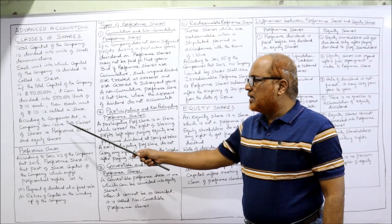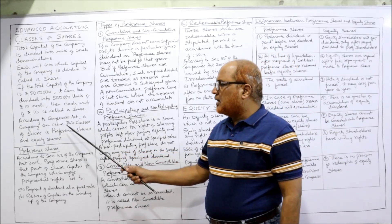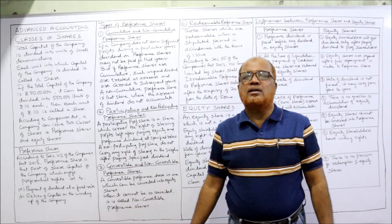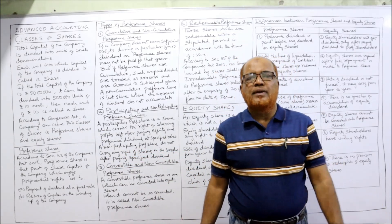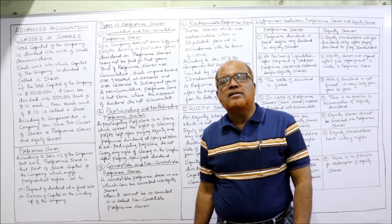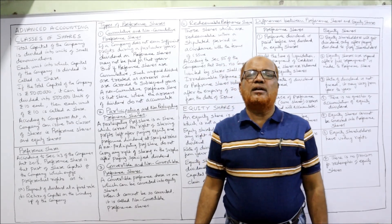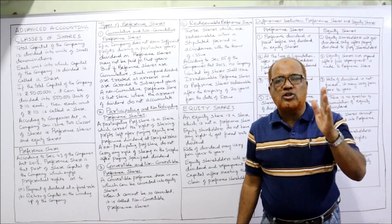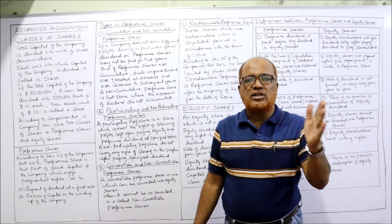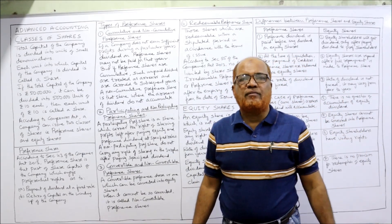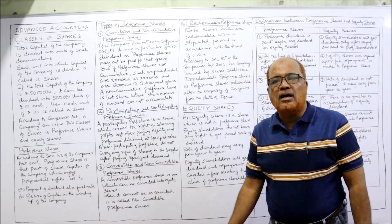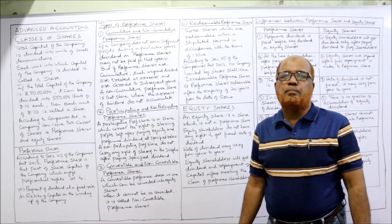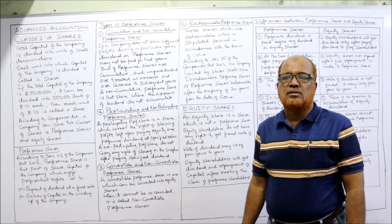According to Companies Act 2013, a company can issue only two classes of shares — equity shares and preference shares. So first of all, we will learn about what are preference shares.